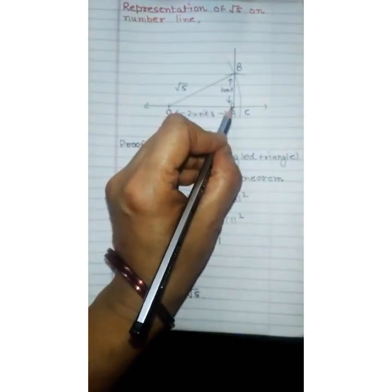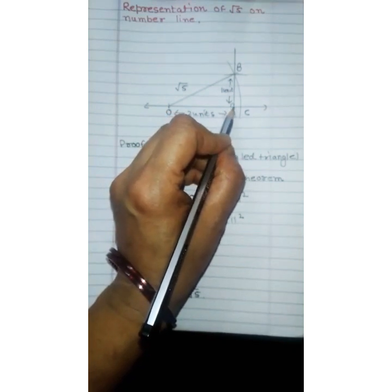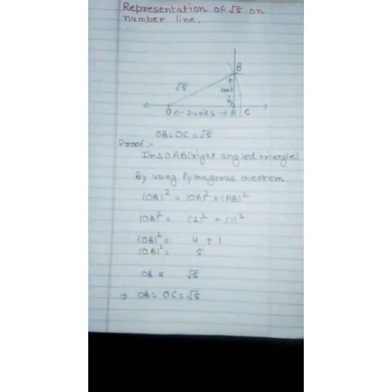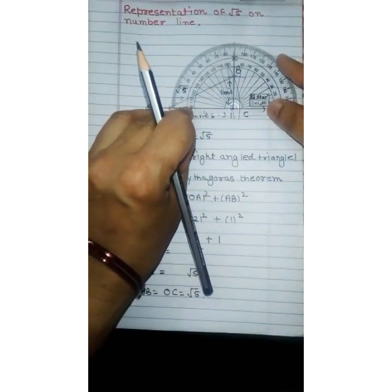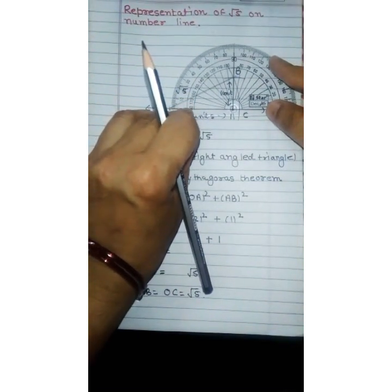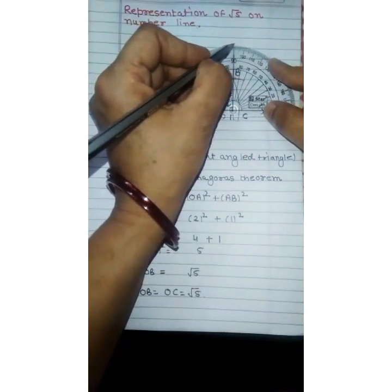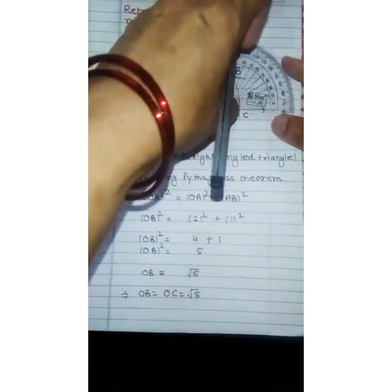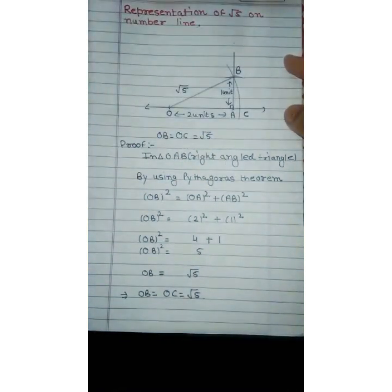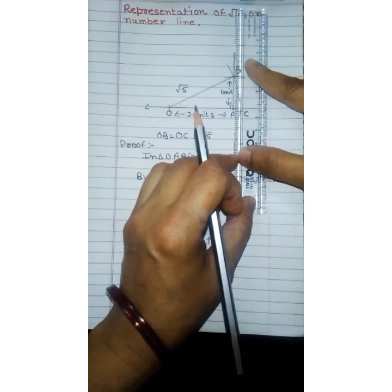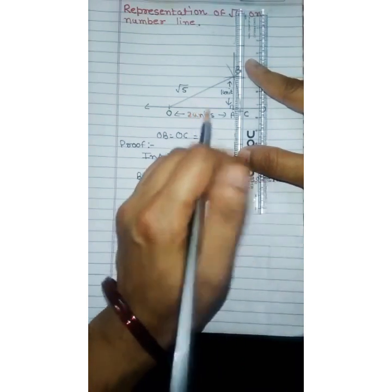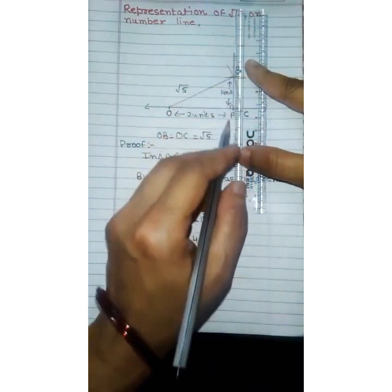After that at A we will draw a 90 degree angle. It means we will place the protractor at A and then mark a point at 90 degrees. After that we will join this point to A and draw a line.